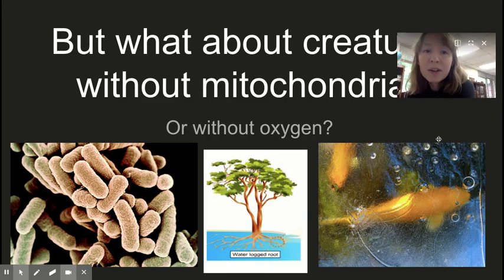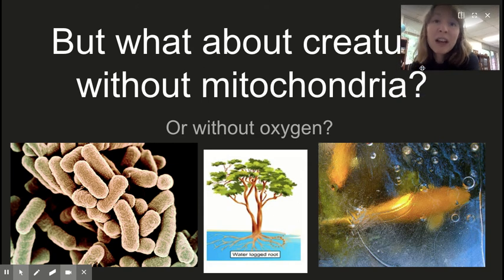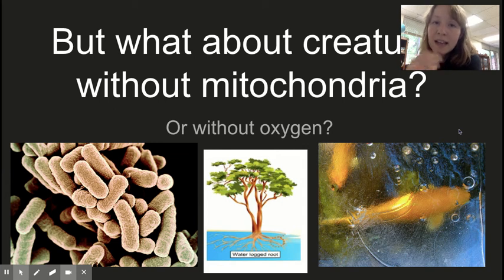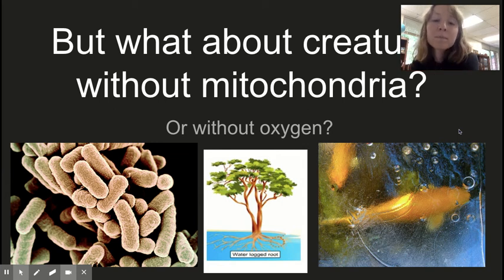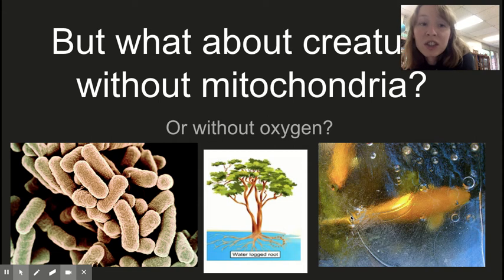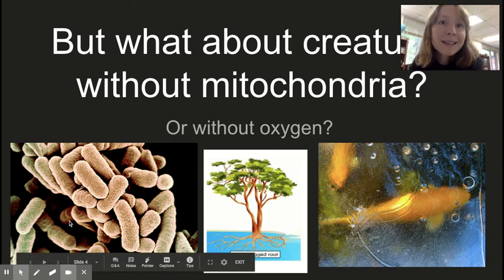But what about creatures that don't have mitochondria, or creatures that live in areas without any oxygen? Those organisms still need to produce ATP for quick energy in their cells. All living things use ATP as the currency for energy. Some organisms, like a goldfish under ice all winter, might not have much oxygen, while others, like bacteria, might not have any mitochondria.